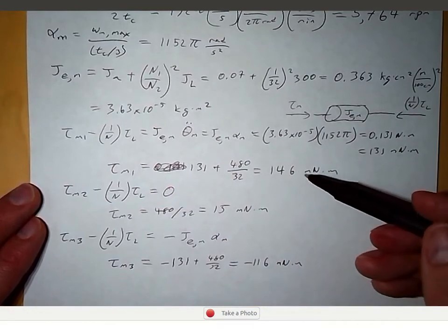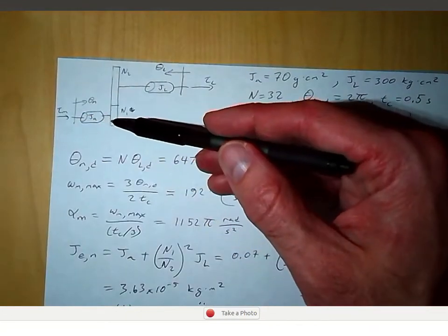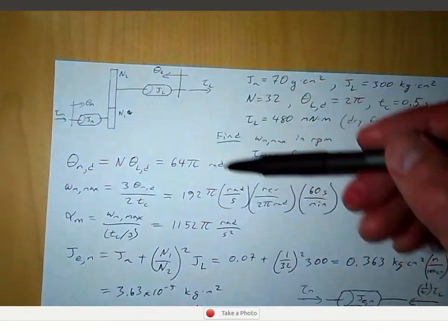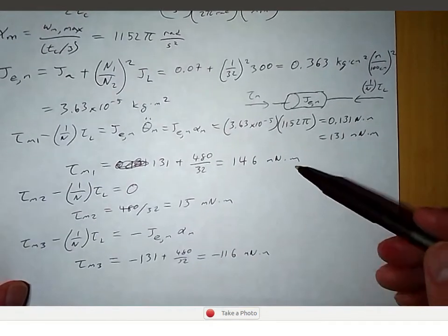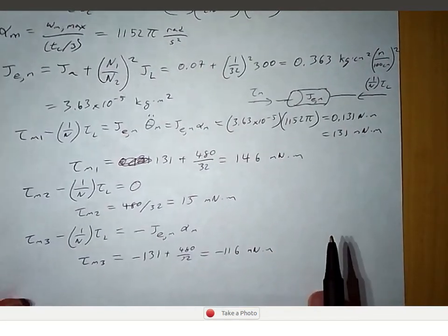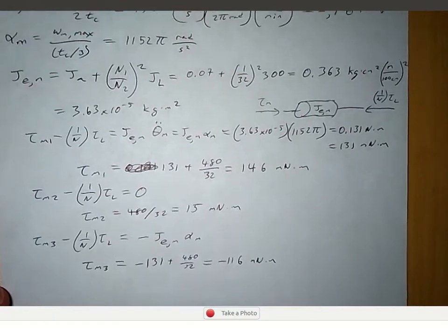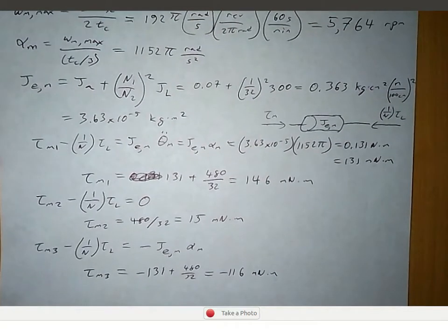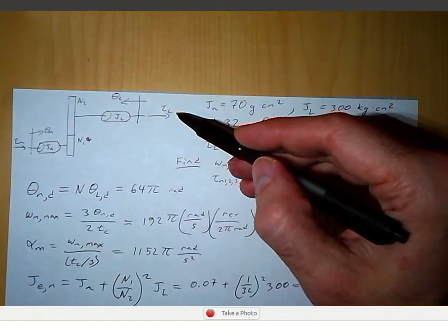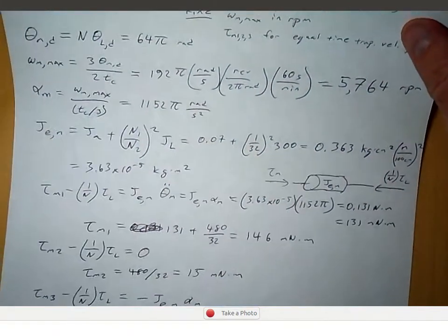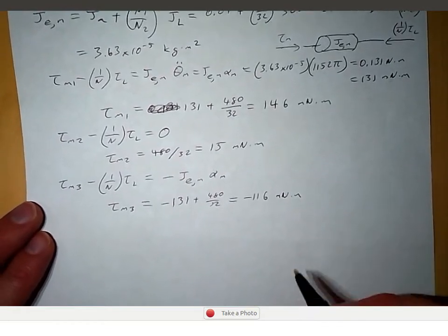The motor torque is going in one direction during the acceleration phase and in the opposite direction during the deceleration phase, since we have a positive value for tau_M1 and a negative value for tau_M3. This is nothing new from previous lessons — the only difference here is that we have a load torque applied on the output shaft. Now we want to introduce the RMS torque.